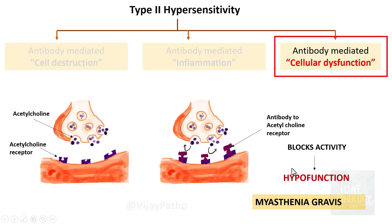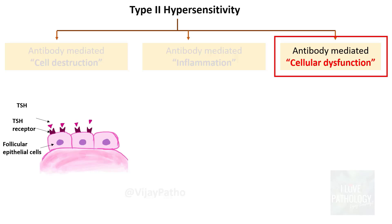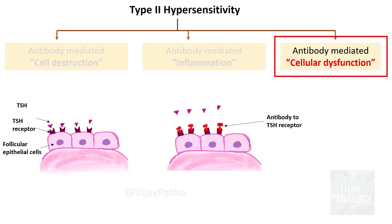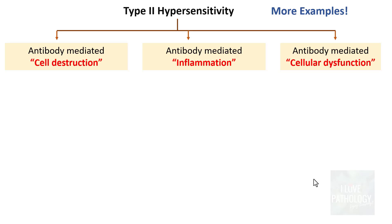In myasthenia gravis there is decreased function, but antibodies can also result in increased function. In Graves disease, the thyroid follicular epithelial cells have TSH receptors, and normally TSH molecules interact with these receptors for normal thyroid function. In Graves disease, an antibody develops against the TSH receptor, and in contrast to myasthenia gravis, this antibody increases activity — leading to hyperfunction and secretion of more and more thyroxine, resulting in the clinical manifestations of Graves disease.